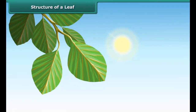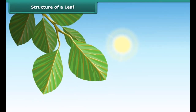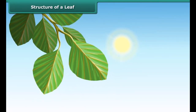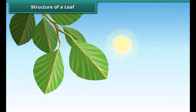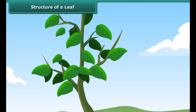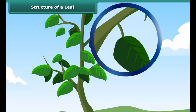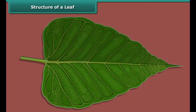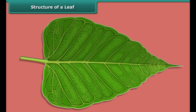A leaf is a flat, green structure attached to a node on the stem. The stalk by which a leaf is attached to the stem is called the petiole. The thin, flat and green part of the leaf is called the lamina.